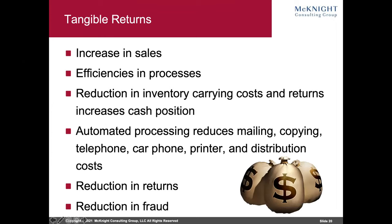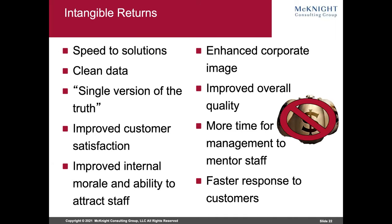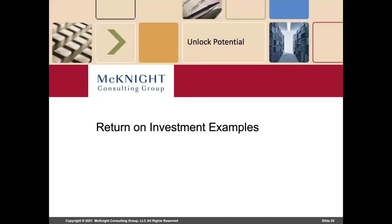Hard tangible returns include: increases in sales — though you can only take the margin, not the whole sale price, to the ROI bottom line. Also: efficiencies in processes, reduction in inventory carrying costs, automated processing, reduction in returns and fraud. Fraud reduction is a big one — it's a straight-to-the-bottom-line savings. Also procurement savings, savings in inventory holding costs, and operational savings. On the intangible side: speed to solutions, clean data, single version of the truth, faster response to customers.